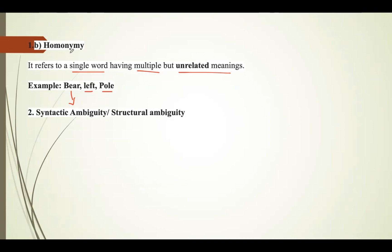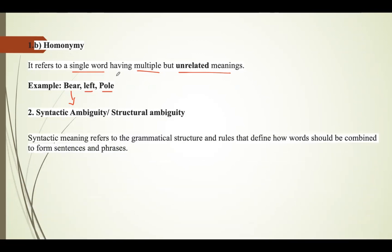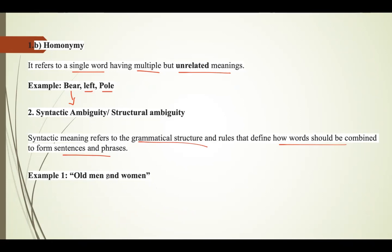The second type is syntactic ambiguity, also called structural ambiguity. It refers to the grammatical structure and rules that define how words are combined to form sentences. A sentence can be interpreted in more than one way due to its structure. For example, 'old men and women' may mean old men and young women, or old men and old women.